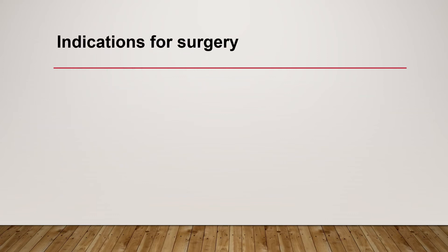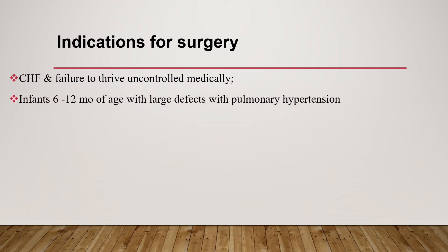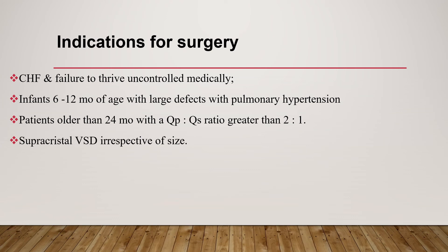Indications for surgery in VSD include: CHF and failure to thrive uncontrolled medically; infants from 6 to 12 months of age with large defect with pulmonary hypertension; patients older than 24 months with pulmonary-to-systemic blood flow ratio greater than 2 to 1; and supracristal VSDs regardless of size are indications to close the VSD.